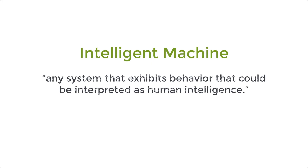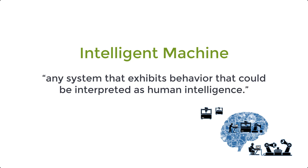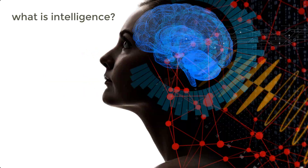In today's time, an intelligent machine is considered to be any system that exhibits behavior that could be interpreted as human intelligence. But for us to build something we can consider intelligent, we must first evaluate and have a deeper understanding of what human intelligence truly is. How would you define intelligence? Even for a very simple word, defining and classifying intelligence is extremely complicated. For decades, the concept of intelligence has been a widely debated topic among members of the psychology community, and no one standard definition exists so far.